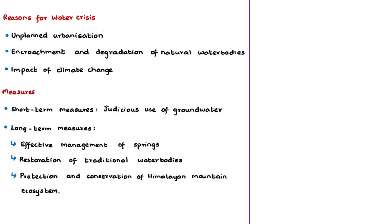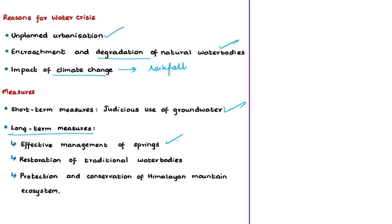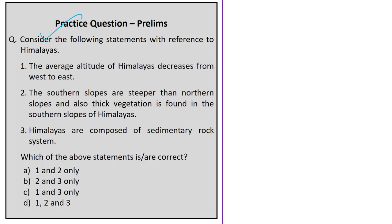The reasons for the water crisis in the Himalayan region are unplanned urbanisation, encroachment and degradation of natural water bodies like springs, ponds, lakes, and canals, and the impact of climate change such as fluctuations in rainfall. To mitigate the stress on water availability, short-term measures include judicious extraction of groundwater, while long-term measures include effective management of springs, restoration of traditional water bodies, and protection of the Himalayan mountain ecosystem. Spring conservation is the need of the hour.